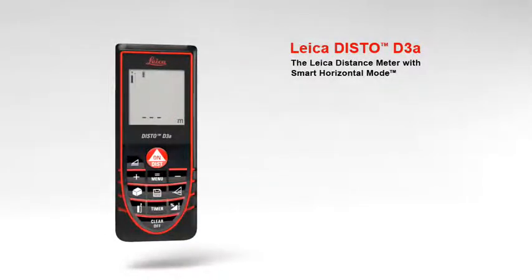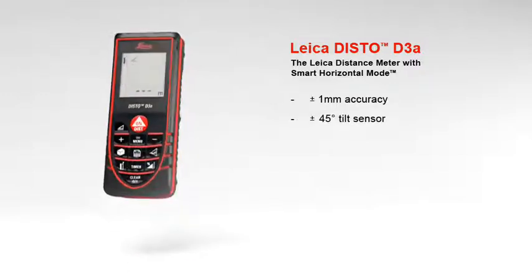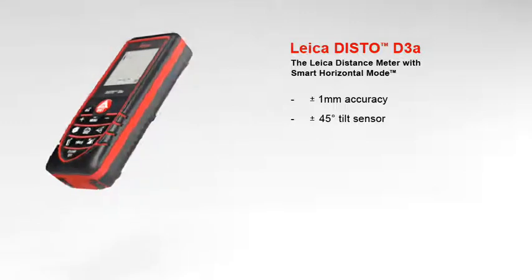The Leica distance meter with smart horizontal mode for absolute precise measurements with a measuring accuracy of plus minus 1 millimeter. The Leica DISTO D3a offers high precision at the touch of a button. A built-in tilt sensor determines tilts.